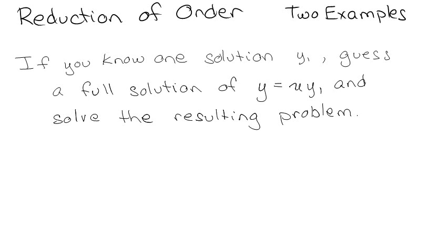Basically, the idea is if it's a second order ODE, it's going to have two solutions, but if you can figure out one of the solutions, then you can guess that the full solution is going to be some function of that. You can then use this cool trick to solve the resulting problem.